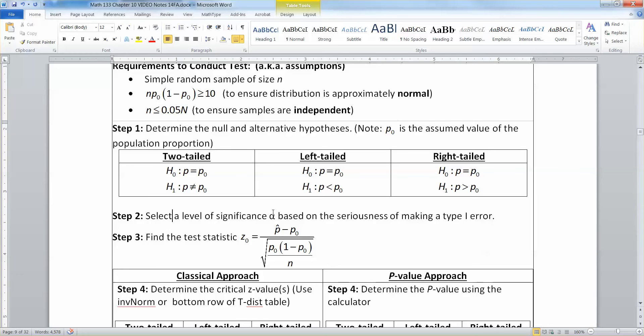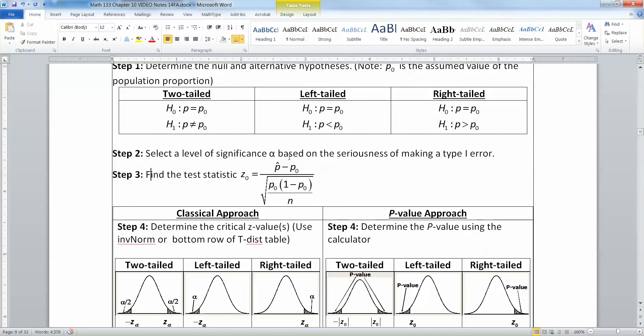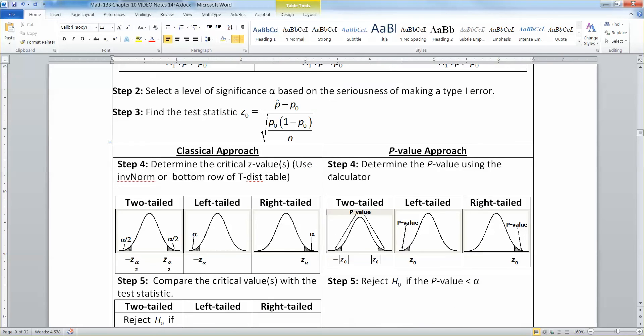Step 2, you'll state your alpha, which is your level of significance. Step 3, you'll find your test statistic, which is that formula, which is a glorified z formula because it's a z-score. You have your value, p-hat, minus the mean of p0 over, and that denominator is the standard error formula that we learned in section 8.2.